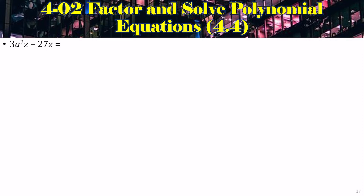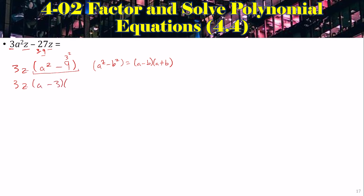Let's factor 3za² − 27z. Look for the greatest common factor — I see a 3 and a z, so factor out 3z. 27 divided by 3 is 9, so 3z(a² − 9). Now try factoring more: a² − 9 has a square; it's a difference of squares because 9 is 3². So a² − b² = (a − b)(a + b) gives (a − 3)(a + 3). Full answer: 3z(a − 3)(a + 3). There are no more exponents, so we're done factoring.